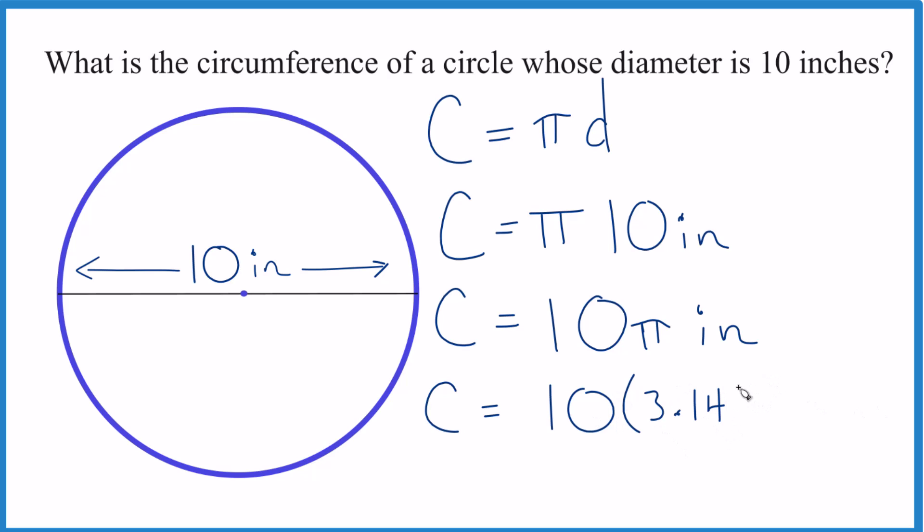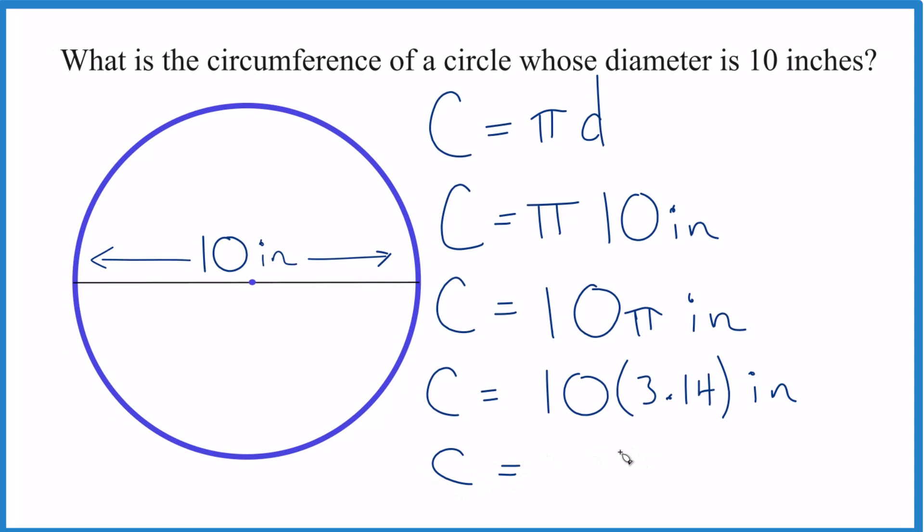So you could say 10 times 3.14, and I've rounded that because it keeps going for quite a while, inches. We end up with circumference equals 31.4 inches. So we've figured out the circumference using the diameter and pi in this formula here.